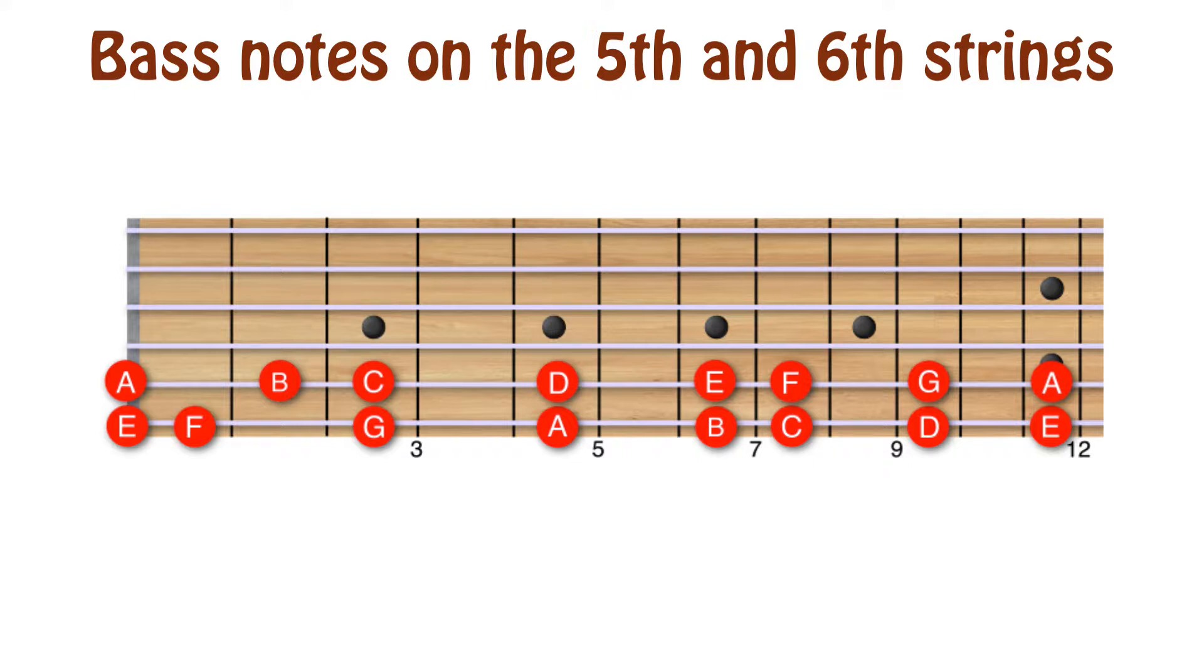In standard tuning, the open sixth string is E and the open fifth string is A. Proceeding up either string, keeping in mind the construction of the chromatic scale we just covered, we can establish where the natural notes lie on the neck.